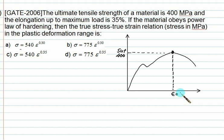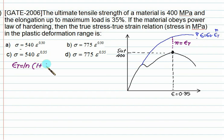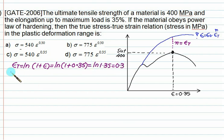The elongation up to maximum load is 35%, so epsilon equals 0.35. We want to find the equation of the flow curve in the form σ = σ₀ · εₜⁿ. At SUT, n equals epsilon-t, and epsilon-t equals ln(1 + epsilon) = ln(1 + 0.35). So epsilon-t = 0.3, and n = 0.3.